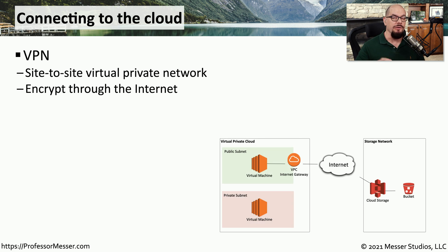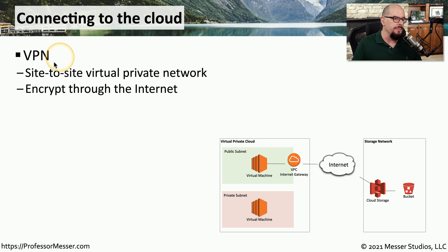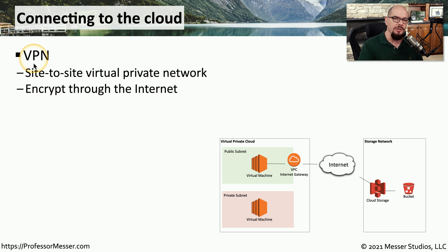If you've built a virtual private cloud on a third-party provider but you want that cloud to be private, then you're going to need some way to connect to that cloud that does not provide access from the rest of the internet. One easy way to do this is by using a virtual private network, or a VPN. Being able to connect from one site to another over this VPN means that you can have encrypted communication into your cloud-based system, but it would prevent any access by anyone else.